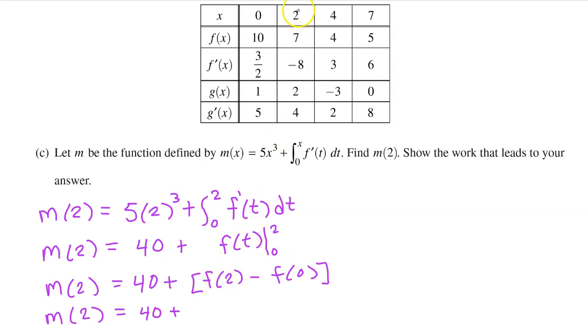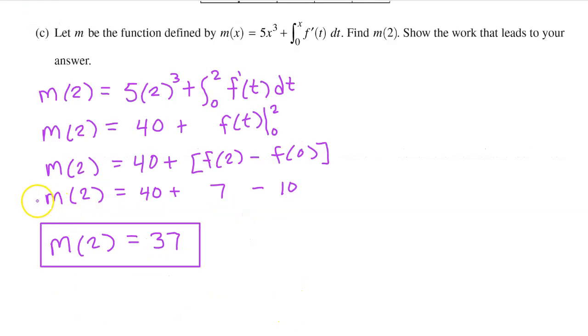f at 2 is 7 and f at 0 is 10. So we have 40 plus 7 minus 10. You could actually stop here if you wanted to, or you can put m at 2 equals 37.